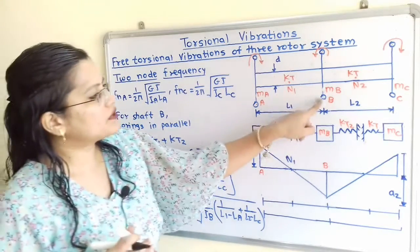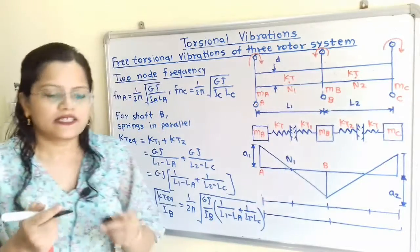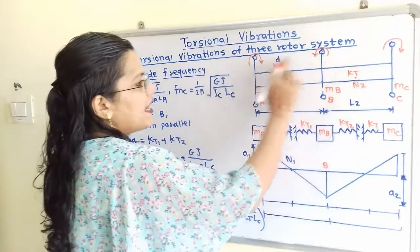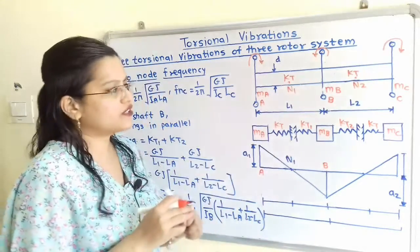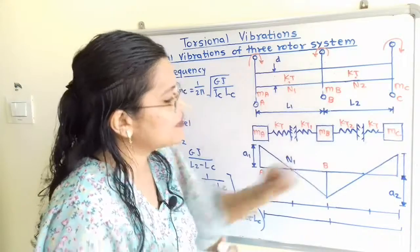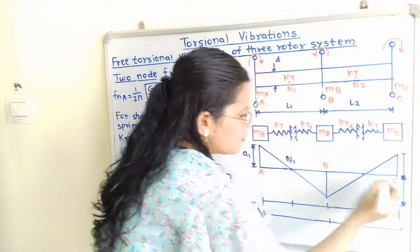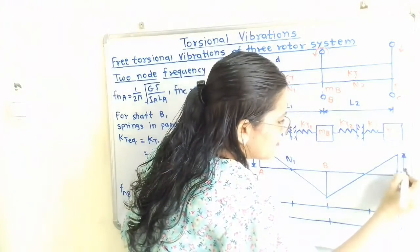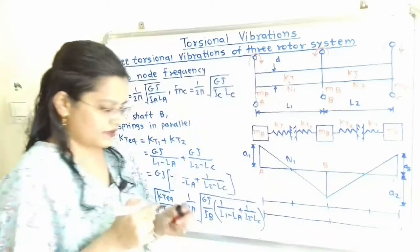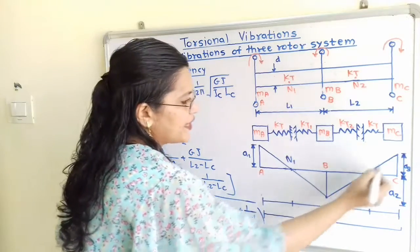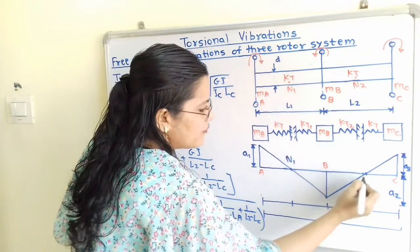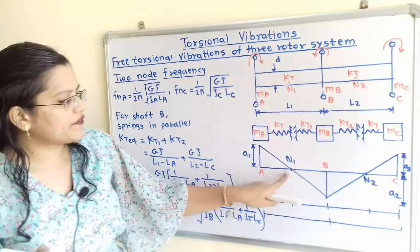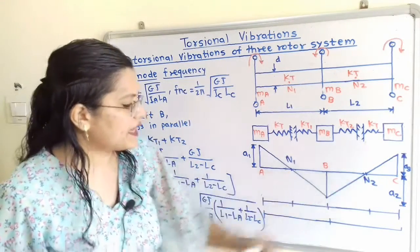Observing rotors B and C, these also rotate in opposite directions. Rotors A and C rotate in the same direction, so the amplitude of vibration for C is also in the upward direction, shown as A3. Joining the endpoints of A2 and A3, the point of intersection gives the node point N2. In this way, we obtain the node points N1 and N2.